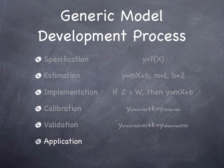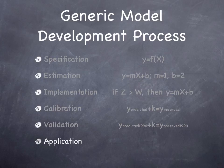Then we need to apply the model — we have it developed as a piece of software. Developers are typically involved in the first five steps, while practicing engineers and planners concern themselves with the application. But this is an iterative process; each step feeds back to previous steps. Our calibration might find a flaw in the implementation, a flaw in the estimation, or worse, a flaw in the specification of the model.